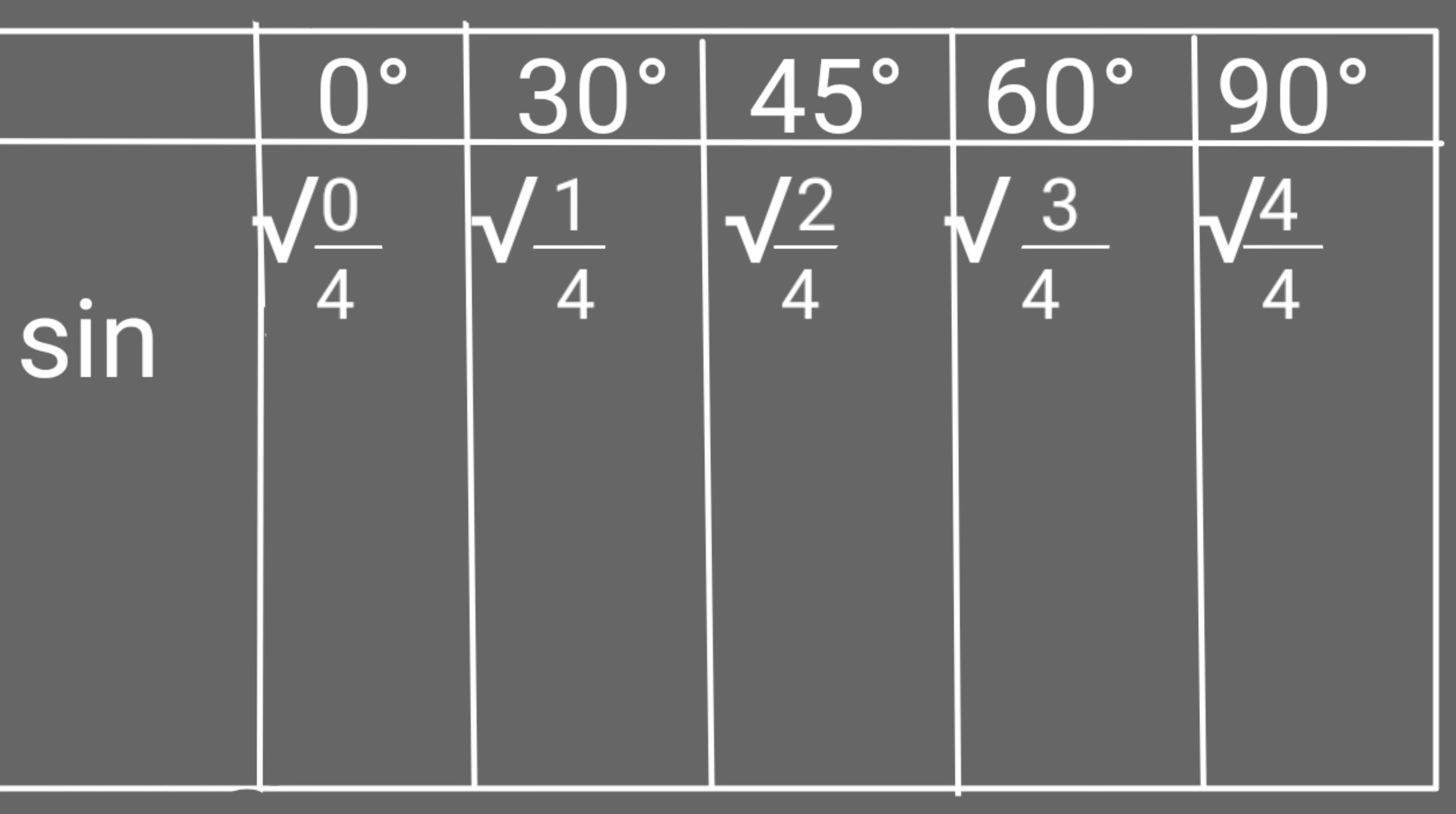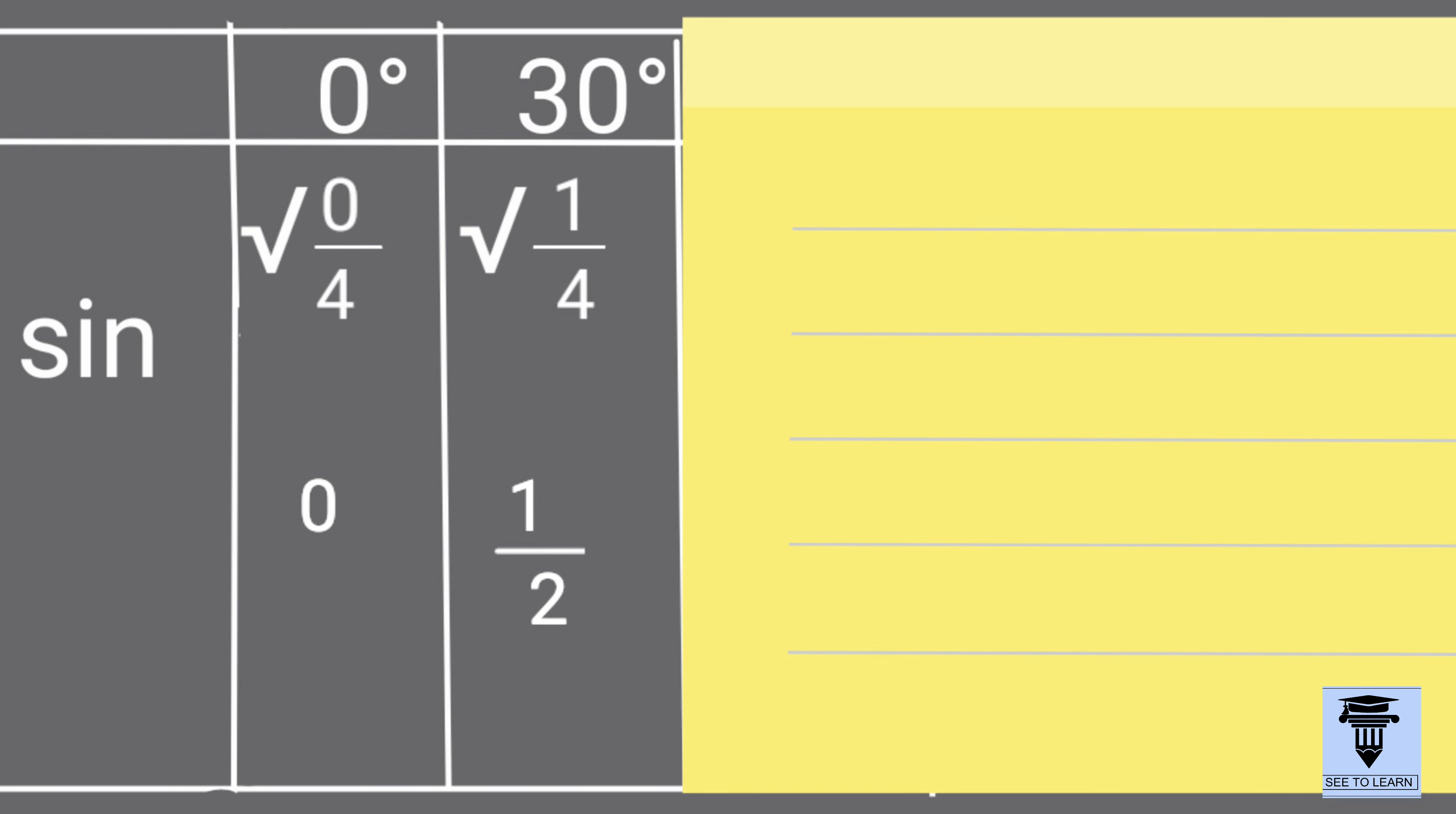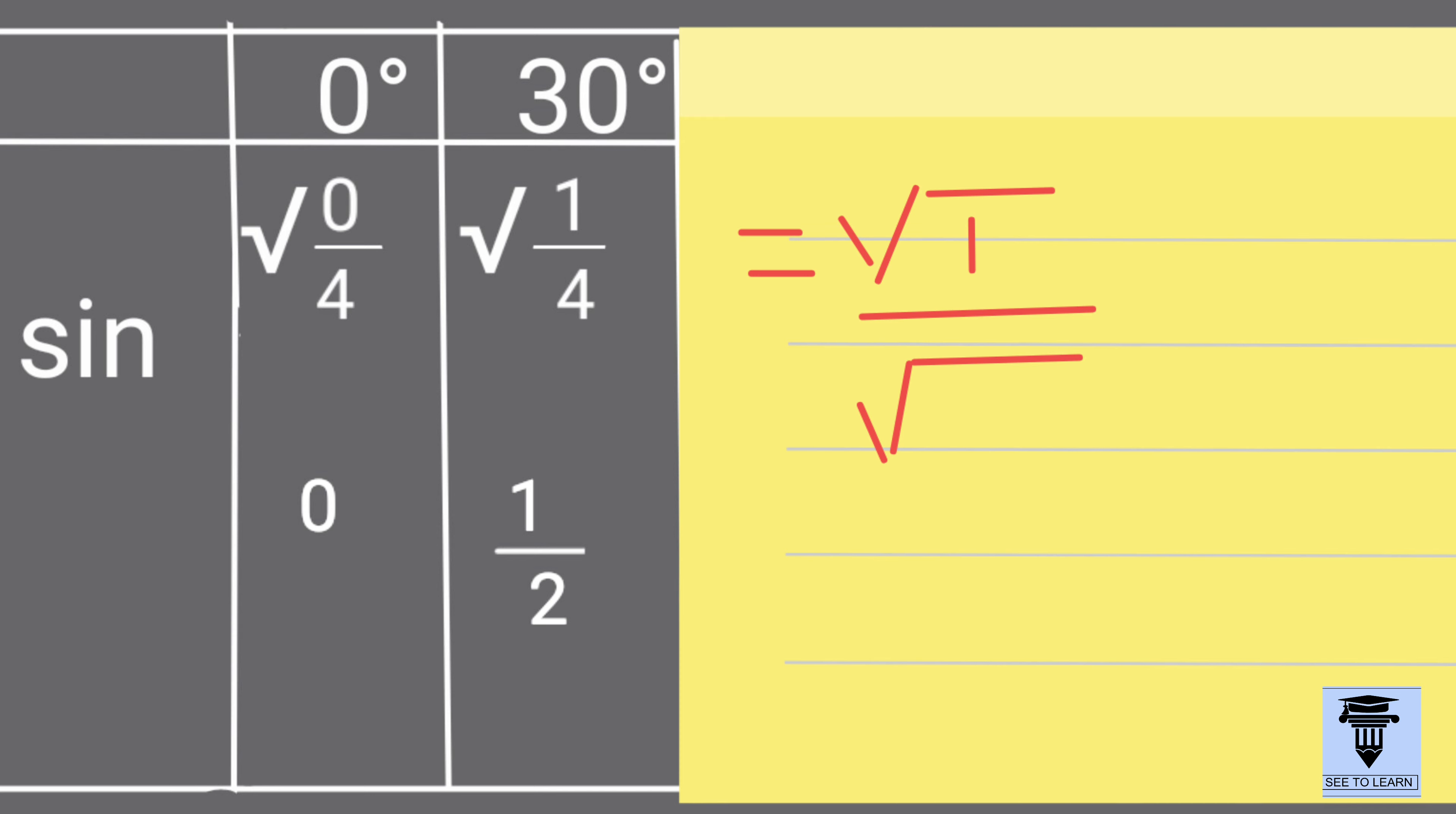Sin 0 is square root of 0 over 4, also called 0 upon 4, which is 0. So, sin 30 is square root of 1 by 4. Square root of 1 is 1 and root 4 is 2. Here we take only positive values.